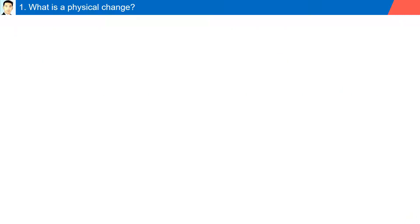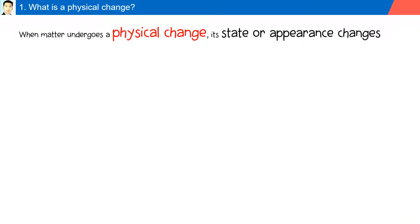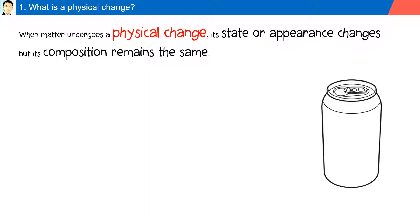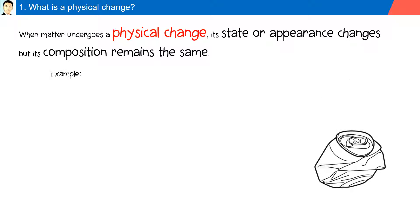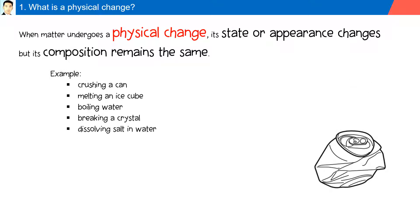What is a physical change? When matter undergoes a physical change, its state or appearance changes, but its composition remains the same. For example: crushing a can, melting an ice cube, boiling water, breaking a crystal, or dissolving salt in water.